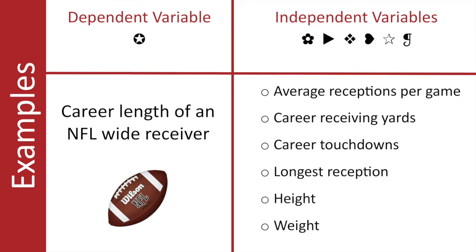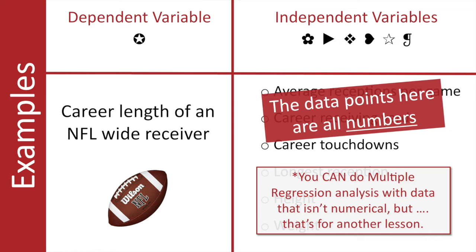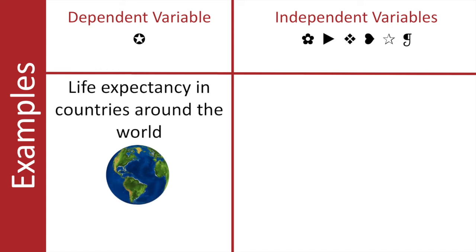Perhaps average receptions per game, or career receiving yards, career touchdowns, longest reception, height, weight. Okay, now notice that all of these data points are numbers. We can do multiple regression analysis with data that isn't numeric, but that's for another lesson. Let's try a different example. This time I'd like to know what factors affect the life expectancy in countries around the world.